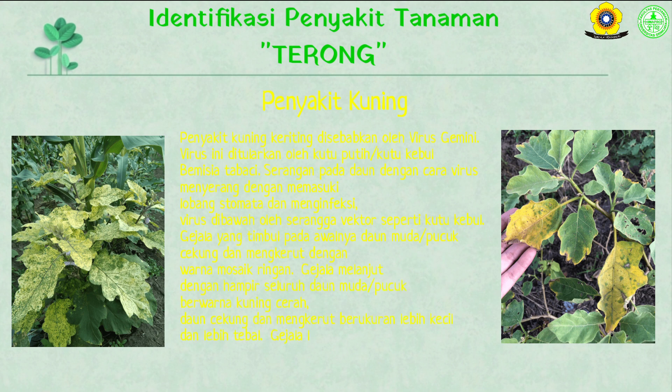Gejala yang timbul pada awalnya daun muda atau pucuk cekung dan mengkerut dengan warna mosaik keringan. Gejala melanjut dengan hampir seluruh daun muda atau pucuk berwarna kuning cerah, daun cekung dan mengkerut berukuran lebih kecil dan lebih tebal. Gejala lain adalah daun berwarna mosaik klorosis.